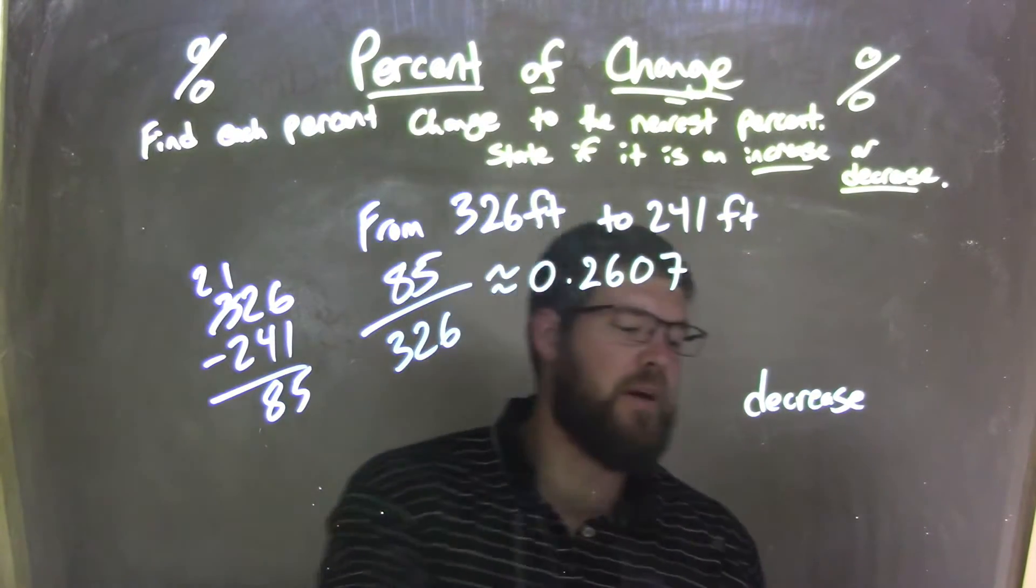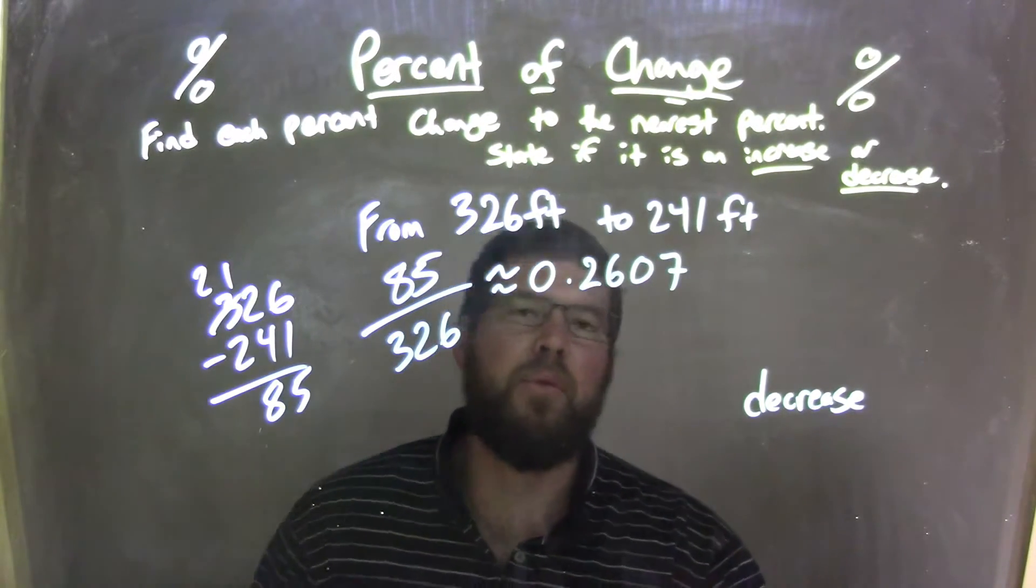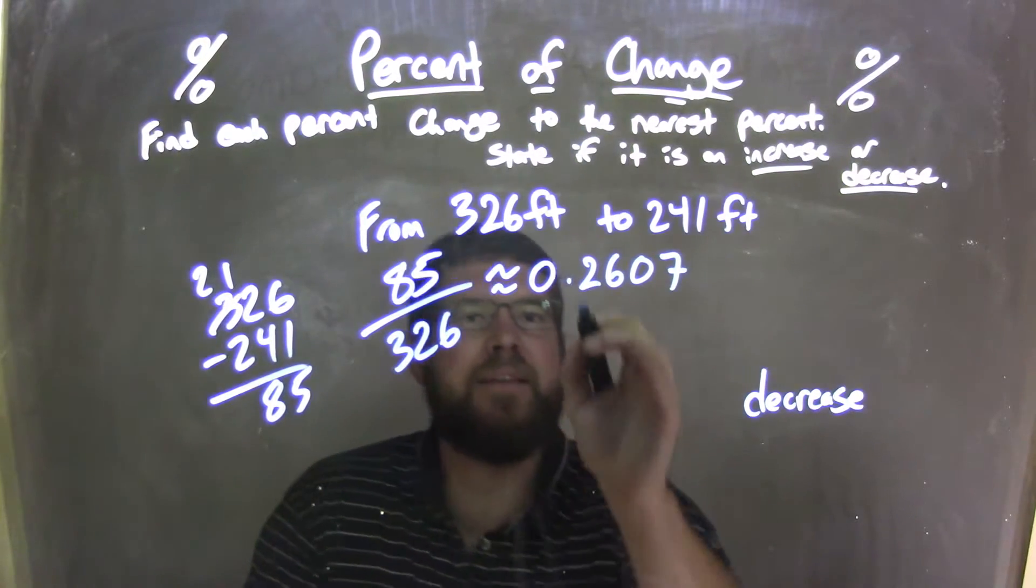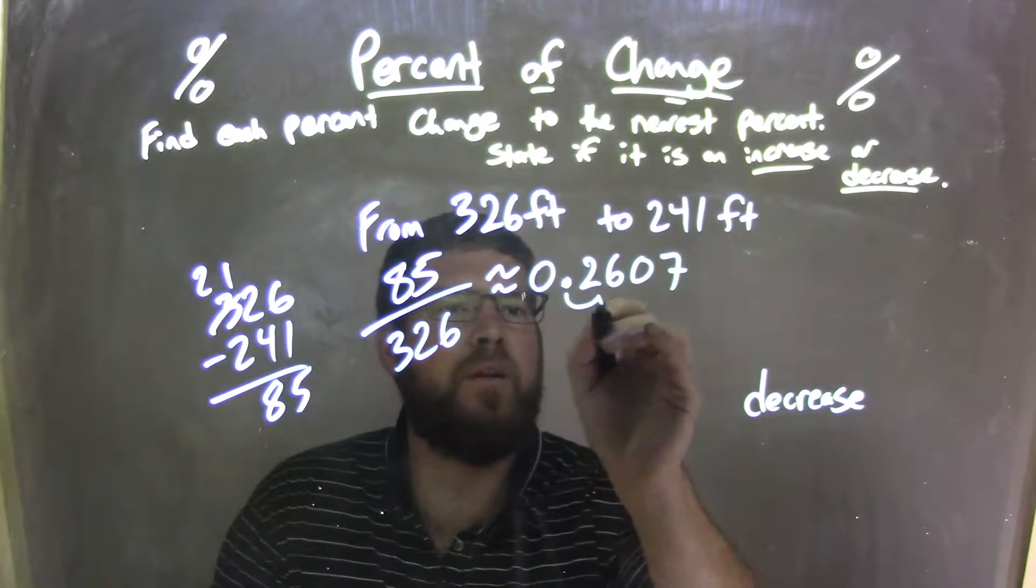0.2607. So we have approximately a decimal of 0.2607. I now need to write that as a percent, so I take that decimal here and move it over two units to the right. 1, 2.